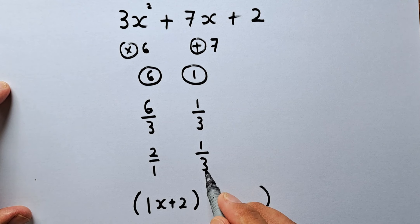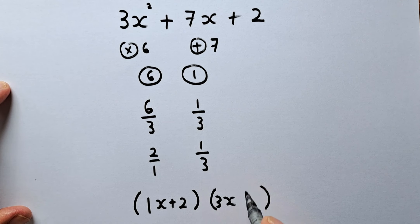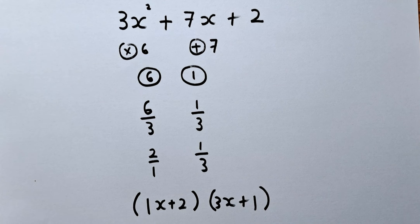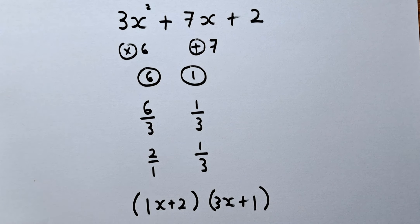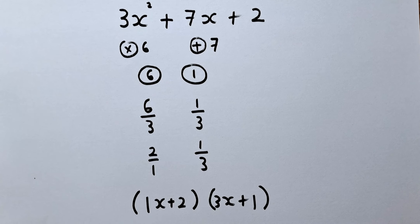And the 3 again will go up and the plus 1. That is how you factorize a quadratic equation quickly. We shall look at 2 more examples and we should be all good for this method.